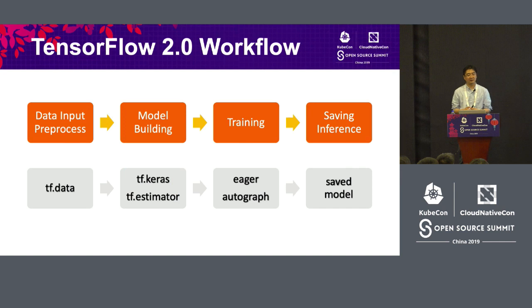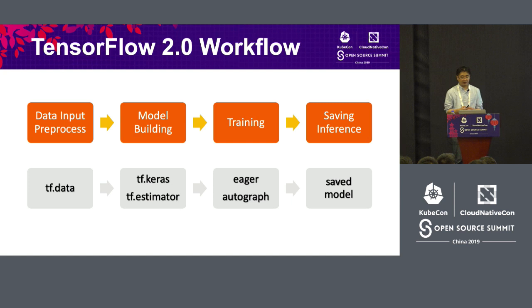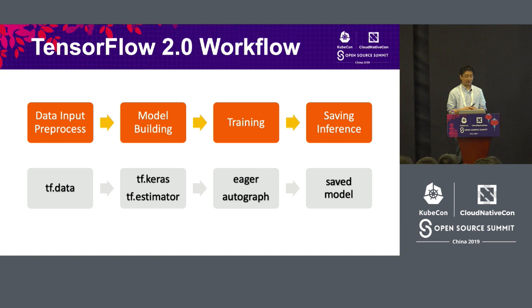Before we jump into deep learning optimization, I want to briefly discuss the background of TensorFlow. As many of you already know, TensorFlow is one of the most popular open source frameworks for machine learning. It was originally developed by Google and has been open source since 2015. Since then, TensorFlow has seen quite extensive growth in both the open source and machine learning community. The most stable version is currently 1.14, but TensorFlow 2.0 is up and coming. A lot of things have changed, and that has quite an impact on many areas we'll discuss in this talk.